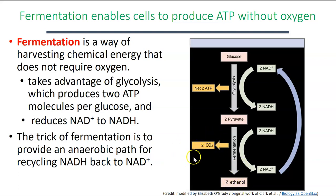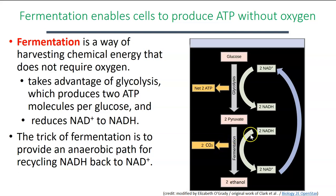In the lab, we can measure fermentation rates by measuring the amount of CO2 that the yeast are making. Keep in mind it's glycolysis that actually allows the yeast to make ATP — fermentation doesn't generate ATP itself, but by recycling NAD+, it allows cells to continue doing glycolysis to yield that small amount of ATP so they can maintain homeostasis even when deprived of oxygen.